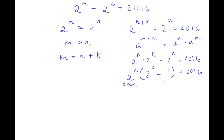Now, if we subtract 1 from an even number, what is it going to be? It's going to be odd, right? So 2 to the power of any number minus 1 — that number will be odd, because 2 to the power of any number is even, so if we subtract 1 from an even number it's going to be odd. So I have an even number times an odd number, meaning we need to rewrite 2016 in the form of an even number times an odd number.